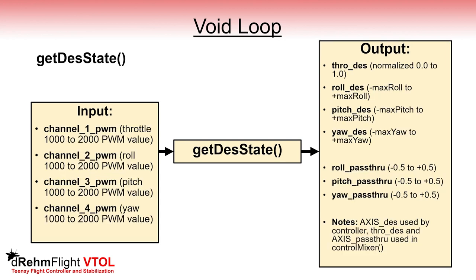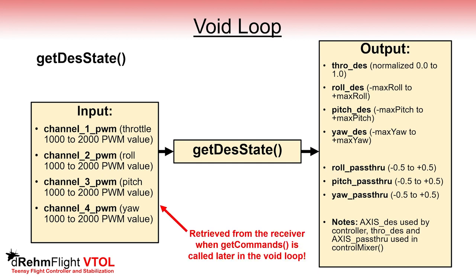Then we call the get desired state function which takes the radio receiver PWM commands — which range from values of 1000 to 2000 — and converts them to desired states of the flight controller. The channel 1, 2, 3, etc. PWM variables are updated later in the void loop, so we are actually using values from the previous loop iteration here. The throttle desired variable is normalized to a value of 0 to 1, which can later be used in the control mixer. The roll desired, pitch desired, and yaw desired variables will range in value depending on the max roll, pitch, and yaw variables. This function also generates roll, pitch, and yaw pass-through variables which can be directly used in the control mixer.